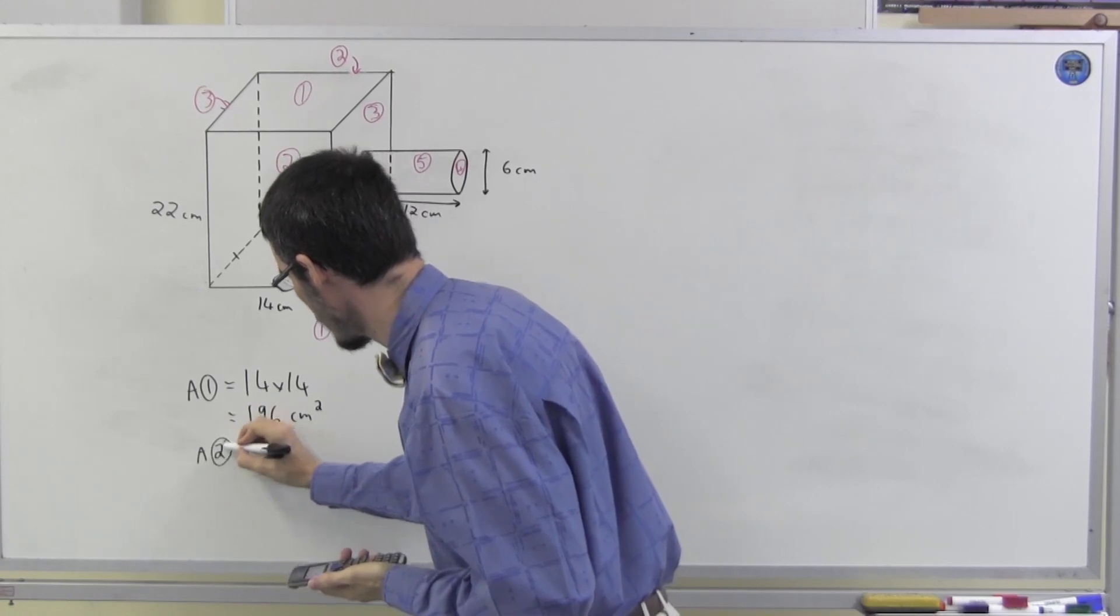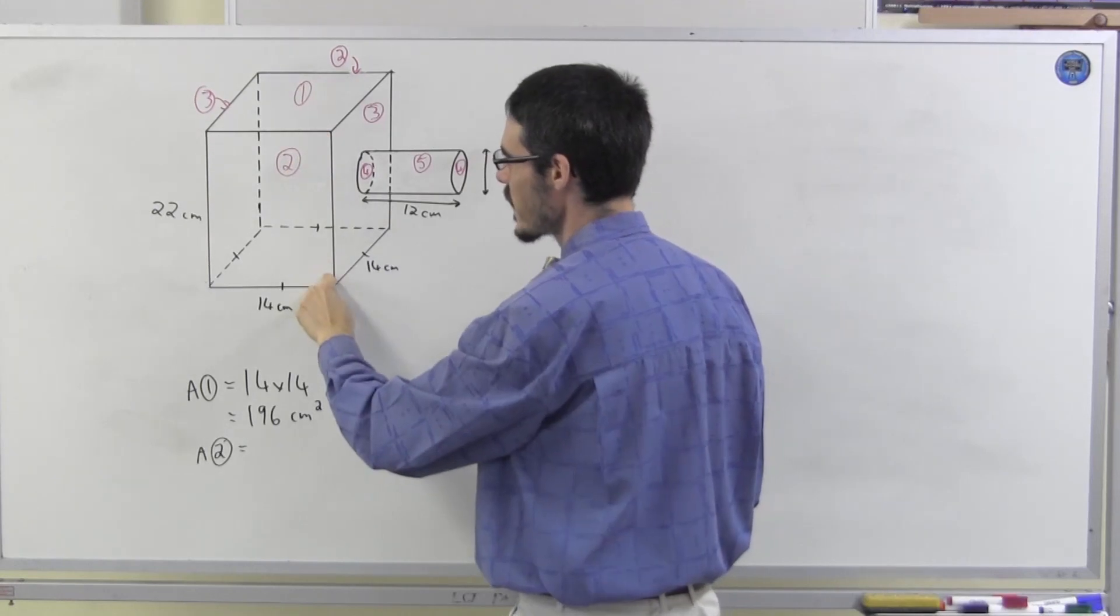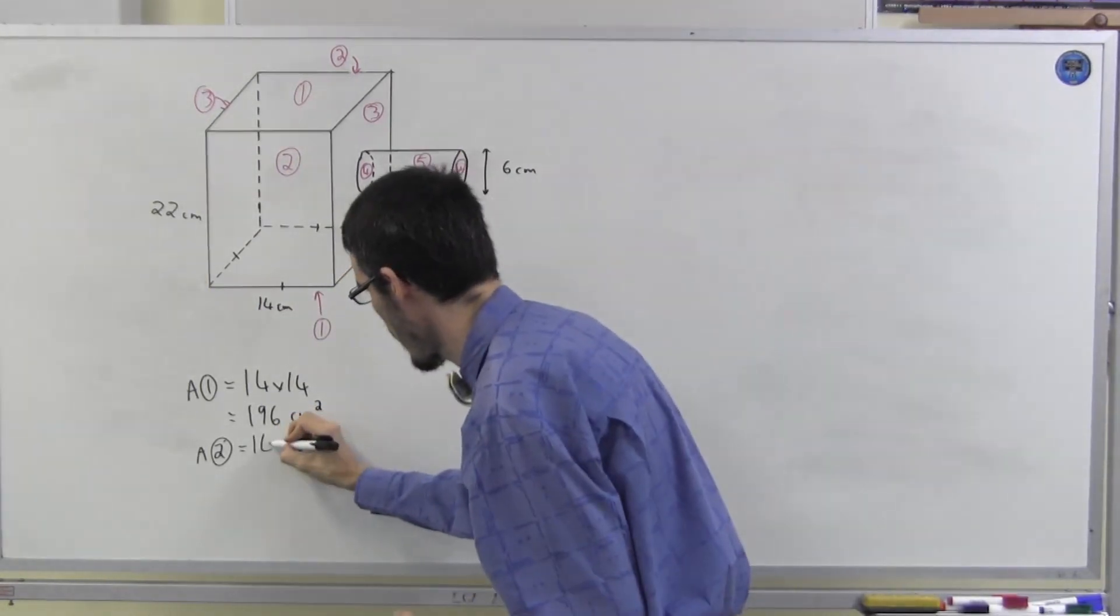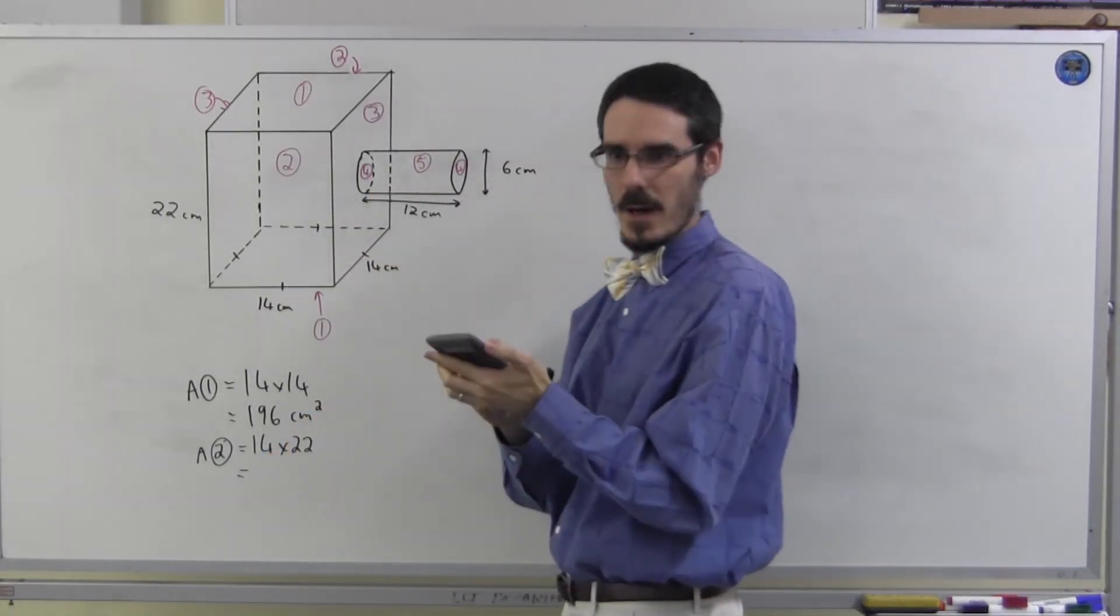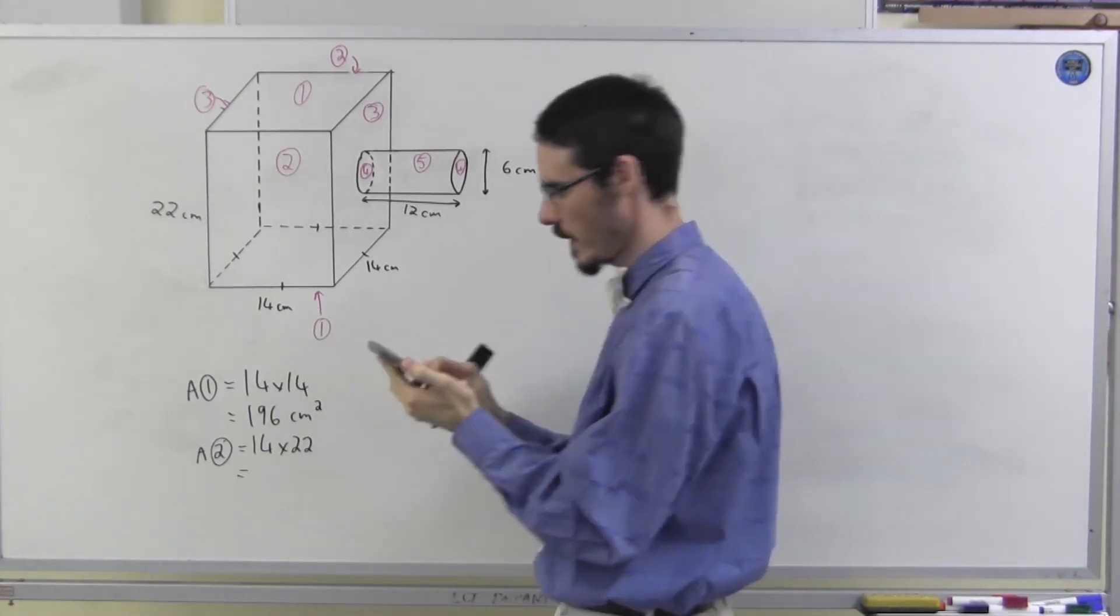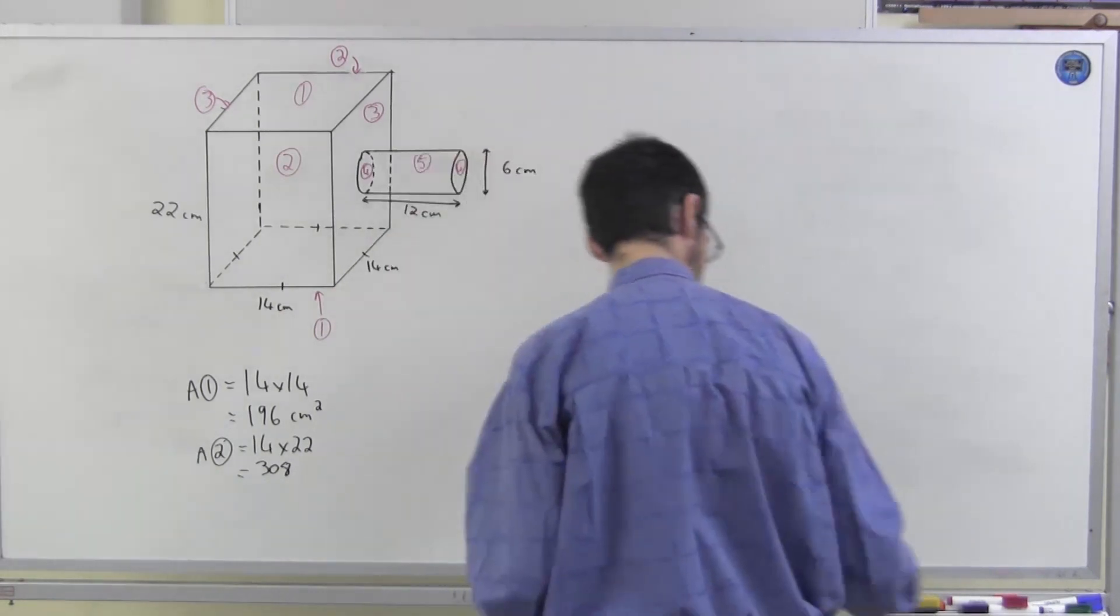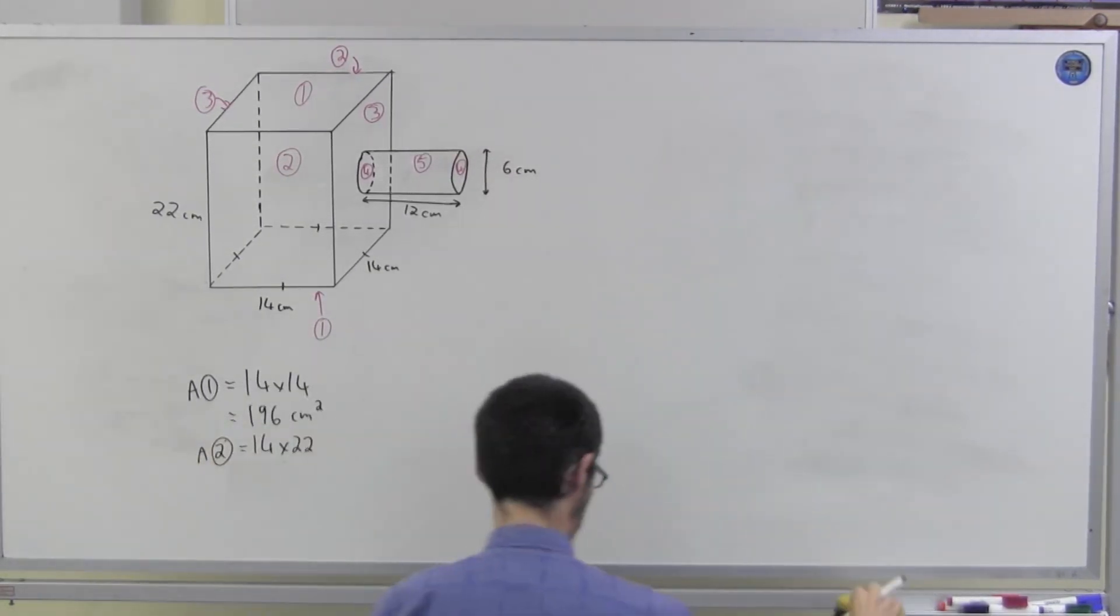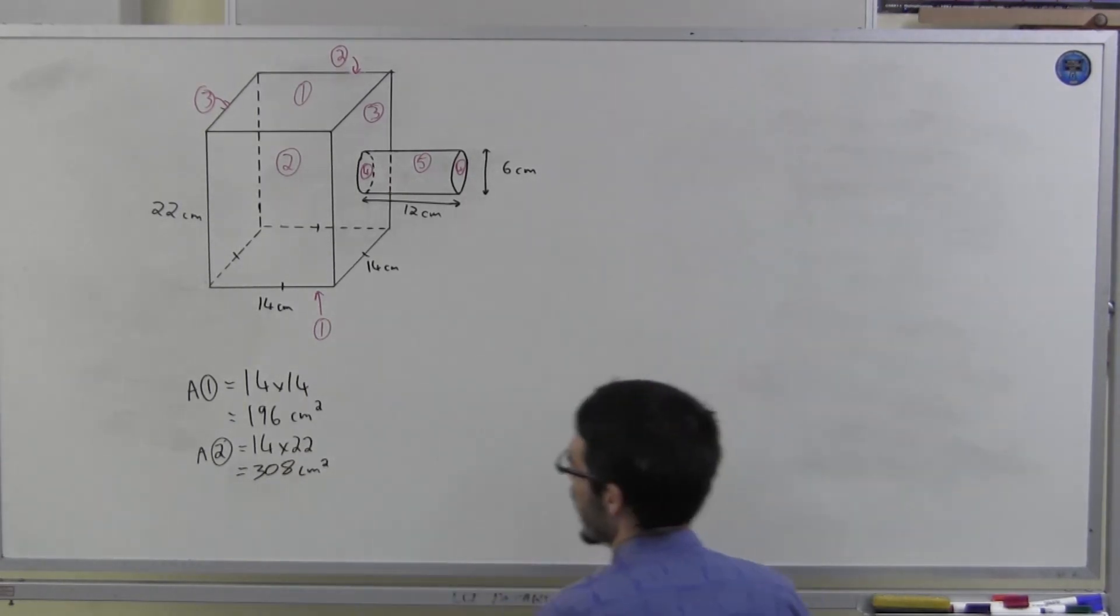Area two. Area two is going to be 14 by 22. 14 by 22. Which is going to be 308. Pretty messy. Try to clear that up a bit. 308. Okay.